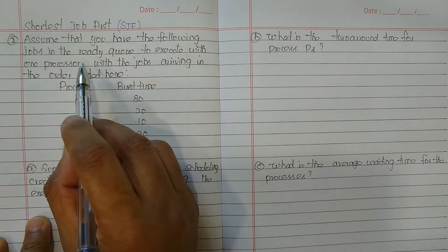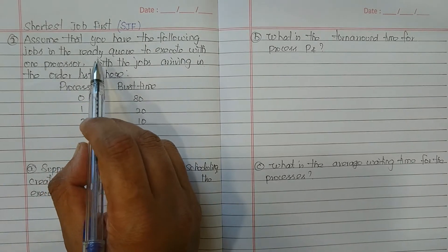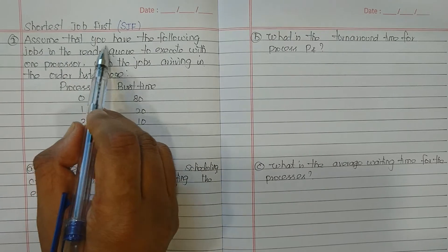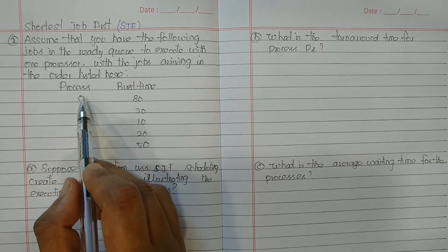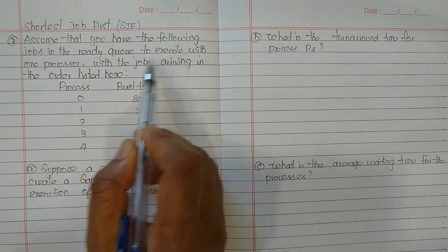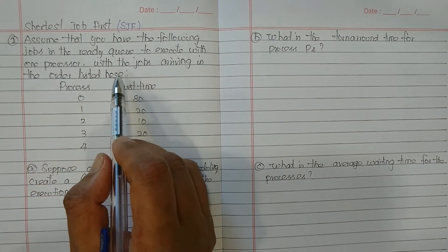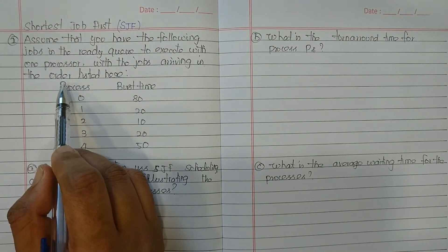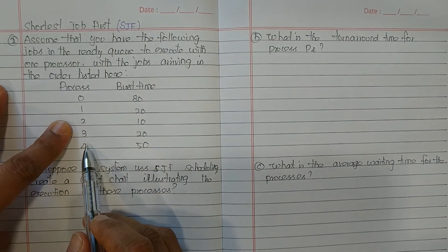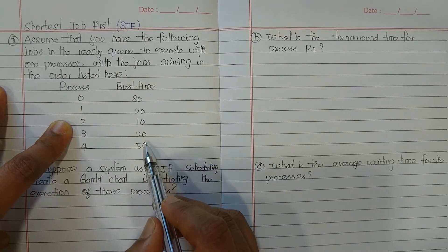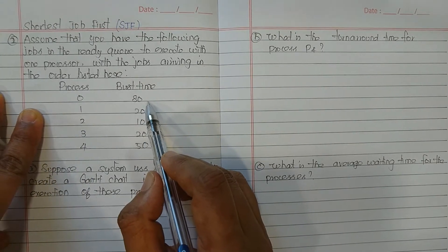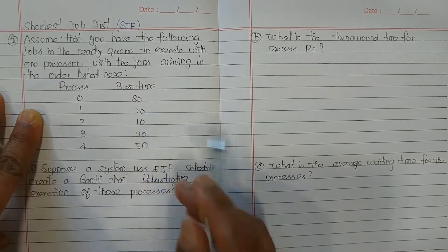We are going to discuss the same question from the previous algorithm again. Assume that you have the following jobs — processes in the ready queue to execute with one processor. These are five processes arriving in the order listed, with their corresponding burst time, that is the CPU execution time in milliseconds.